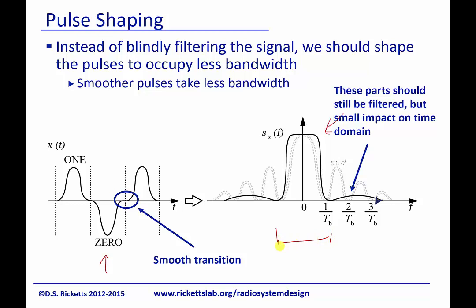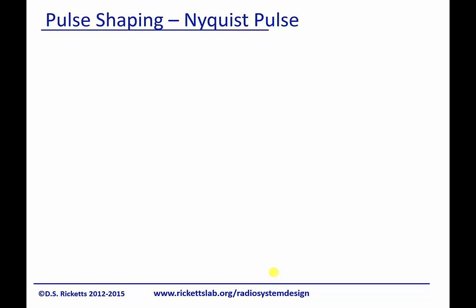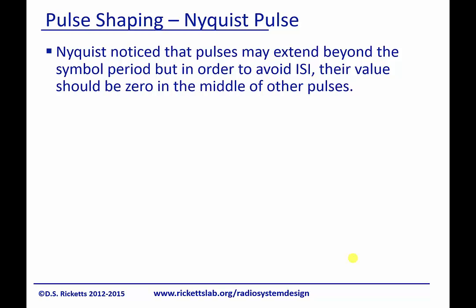It turns out there is a solution and it's called a Nyquist pulse. Nyquist noticed that these pulses, when we smooth them, basically when we try to filter them in the frequency domain, if we try to build this low-pass filter we talked about, the pulses end up going from a square pulse to this pulse where the sides have some signal that will interfere with future pulses.